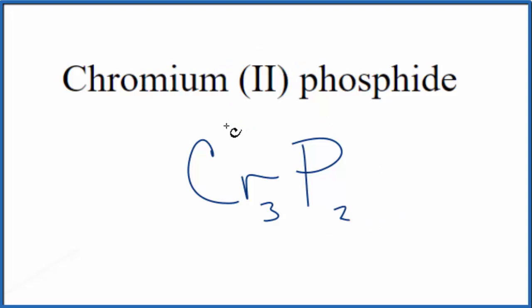Let's check our work, though. We said chromium, that was 2+, and we looked the phosphide up, phosphorus as an ion, 3-. So 3 times 2+, that's 6+, 2 times 3-, 6-. So these two add up to 0, net charge is 0.